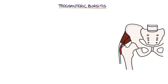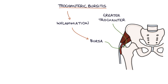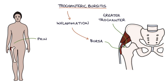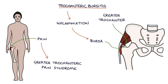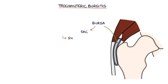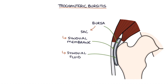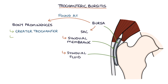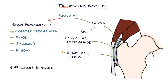Trochanteric bursitis refers to inflammation of a bursa over the greater trochanter on the outer hip. It produces pain localized to the outer hip, referred to as greater trochanteric pain syndrome. Bursae are sacs created by synovial membrane filled with a small amount of synovial fluid. They're found at bony prominences, for example at the greater trochanter on the hip, the knee, the shoulder, and the elbow. They act to reduce friction between the bones and the soft tissues during movement of the joint.